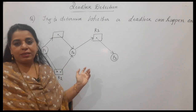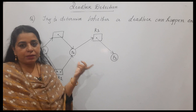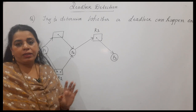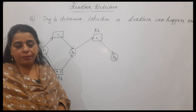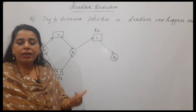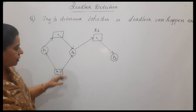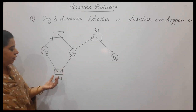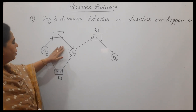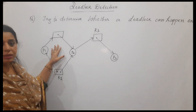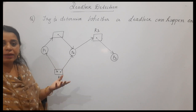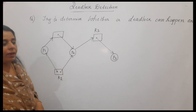In the previous session, I said that just by observing a resource allocation graph, it is not possible for us to tell whether deadlock will occur or not in the system, if that resource allocation graph consists of multiple instances of the resource. Can we tell whether deadlock occurs just by observing the graph? Because we said if there is a cycle formed in the graph, then definitely there is a deadlock occurring in the system.